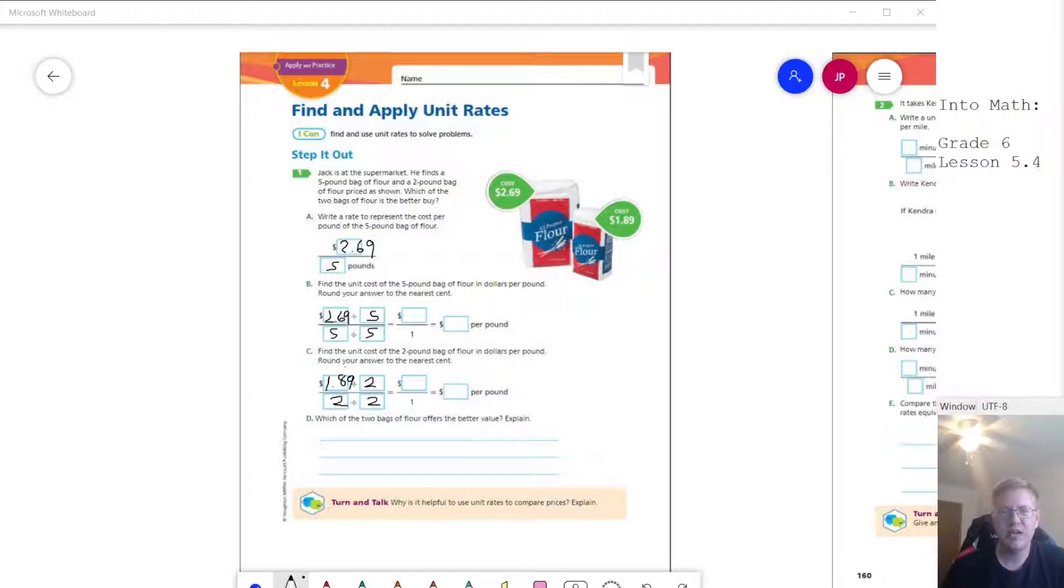All right, so I've got everything typed out now so that we can work our problem. What we're going to find when we start dividing is that this is probably going to be our better deal. Five goes into 2.69, so we are going to end up with something in the $0.50 range for our answer. It looks like we would be just short of $0.54 per pound.